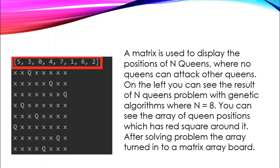A matrix is used to display the positions of N queens where no queens can attack any other queens. On the left you can see the result of the N-queens problem with genetic algorithm where N equals 8. The numbers shown are just indexes of the queen cells. After solving, the problem array is turned into a matrix board, which you can see displayed on the left.